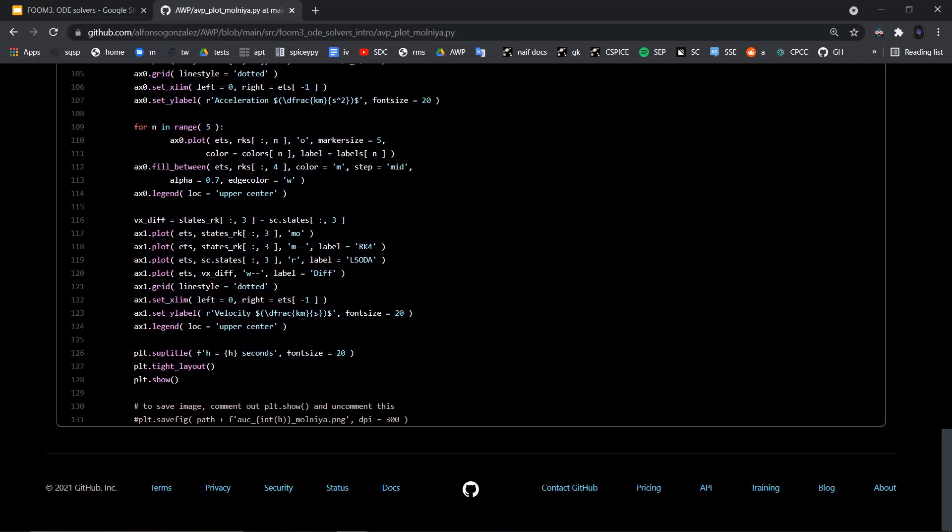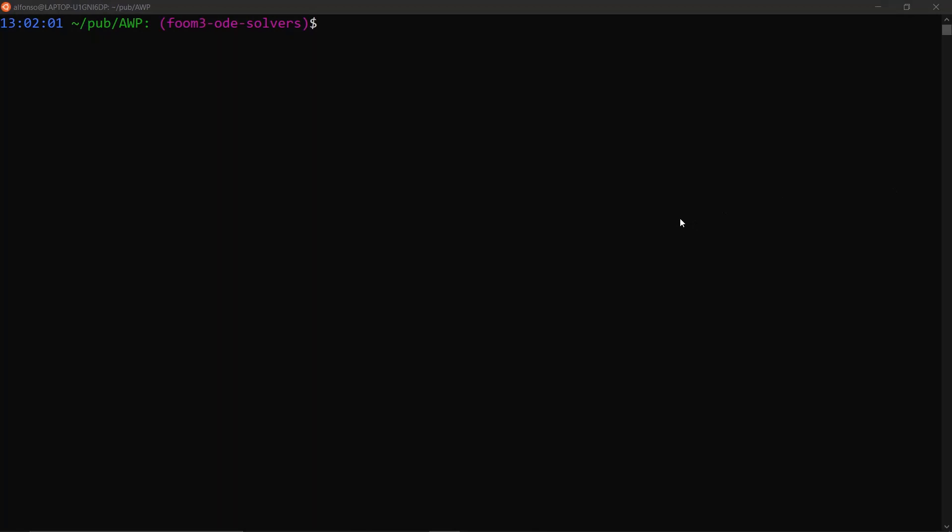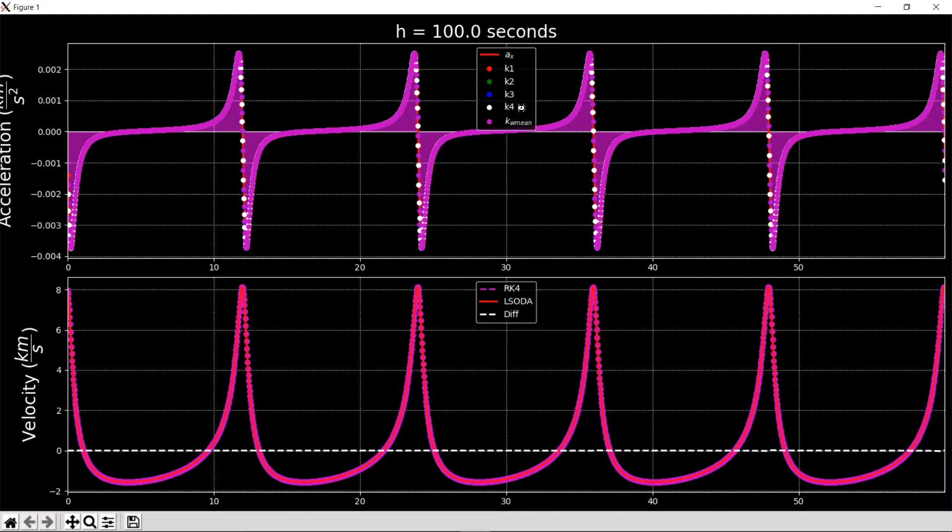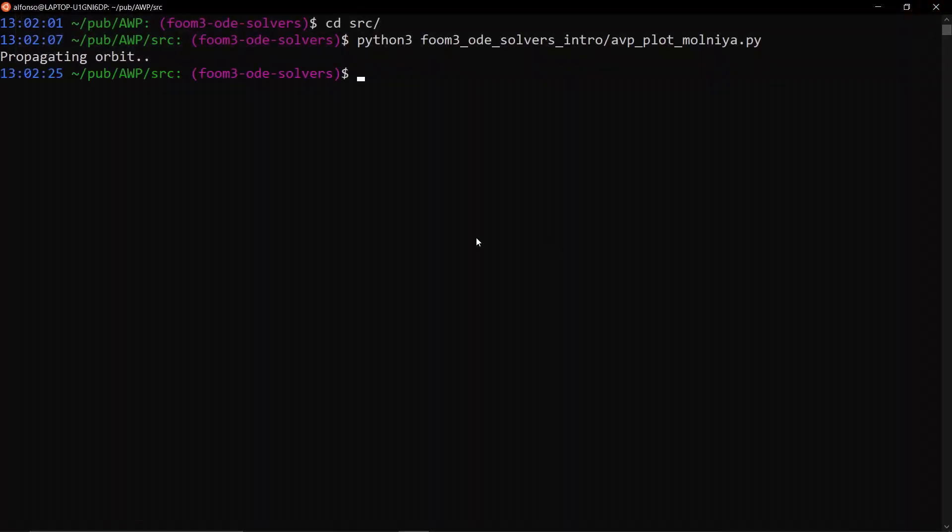And then in order to run them, it's actually pretty simple. Starting from the base directory of the repository, you can say cd src python3 foom3, and then we want to do the Molniya plot. You can just run it like that, and then we full screen it, and it loads. It's running a little bit slower because I'm doing the screen recording, but then there is a plot. So you can just really quickly run through that, change some of the orbital parameters and the time steps to kind of experiment with those plots yourself.